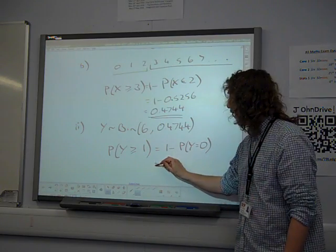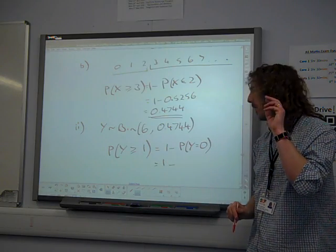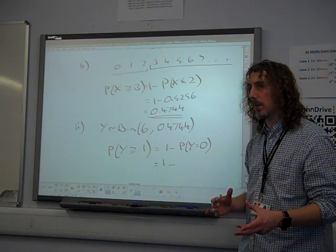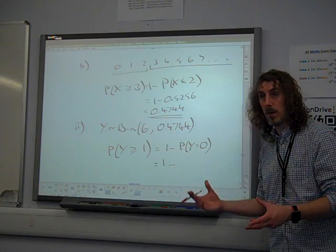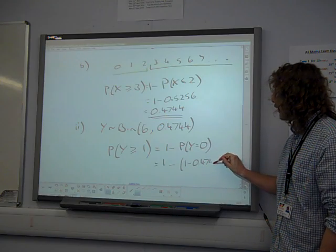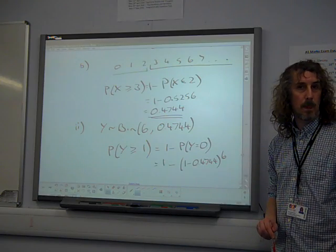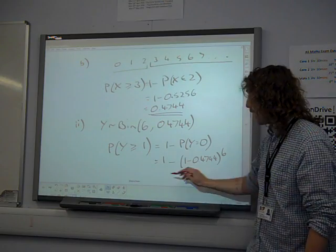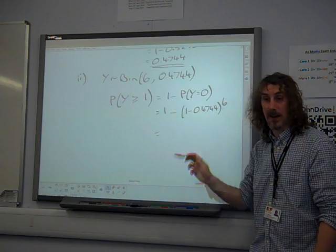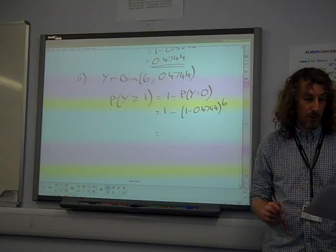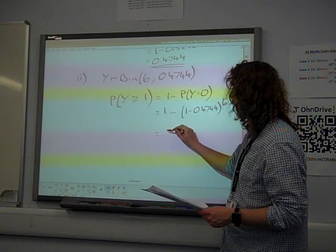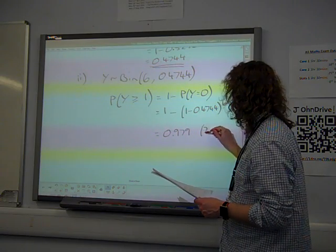And the probability that Y is zero is six failures in this binomial. So you could write six C zero, 0.4744 to the zero. But both of those things are equal to one, so you just need to write one minus 0.4744 to the six. I did have a few people who didn't do the one minus here, who just worked out that probability on its own, and that didn't get you the marks. So that gave you 0.979, I think, if you work all that out to three significant figures.